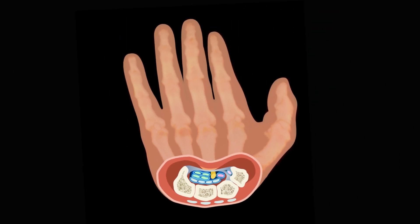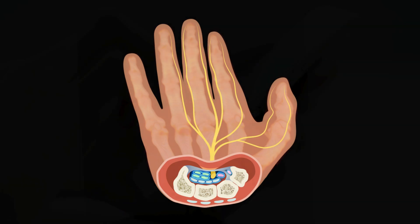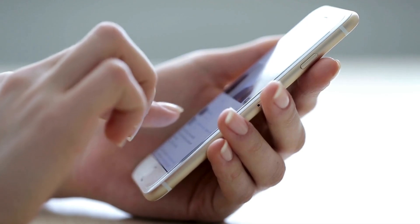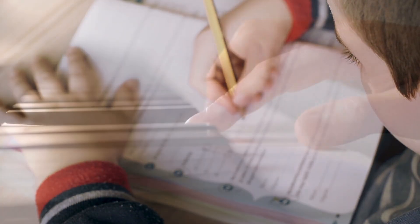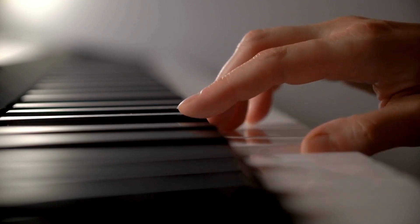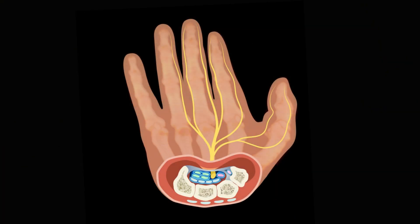The median nerve plays an important role in the innervation of both extrinsic and intrinsic muscles of the hand. Gross and fine motor control — such as scrolling through your phone, doodling on your homework, or playing your favorite instrument — would be impossible without these muscles. Sensation within your thumb, index, and middle fingers, as well as the lateral half of your fourth digit, is also due to the innervation of the median nerve.